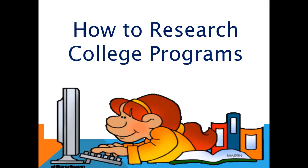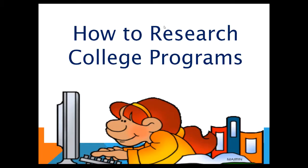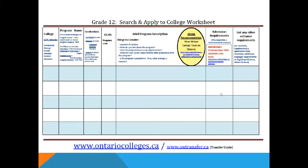Next, I'll be passing it on to Mr. Bruda, who will go over how to research college programs. So we'll be looking at the grade 12 search and apply to college worksheet. You can find these large sheets underneath the appointment binder in guidance. I'm going to briefly discuss each column so you have a better understanding of what you're looking for when you do your research. On the far left, that's where you put the college names — some of the most popular ones in the GTA are Centennial, George Brown, Humber, Seneca, and Sheridan.